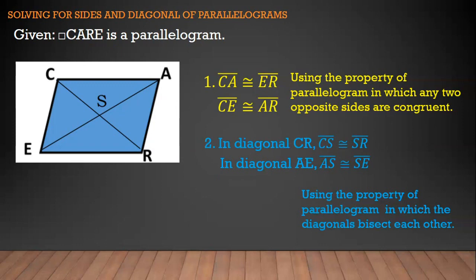So in diagonal CR, we have segment CS is congruent to segment SR — they are equal to each other. And in diagonal AE, segment AS is congruent to segment SE. These properties will be used in finding the sides and diagonals of a parallelogram.